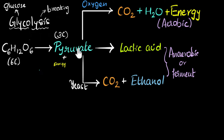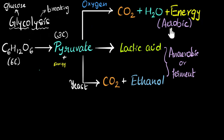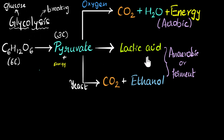In the aerobic pathway, we get energy when glucose is broken into pyruvate during glycolysis, and we again get a lot of energy when pyruvate is further broken down — that's why aerobic respiration is awesome, it gives you a lot of energy. In the fermentation pathway, energy is only released during glycolysis; when pyruvate is broken down, no more energy is released — that's why fermentation only gives you a little bit of energy.